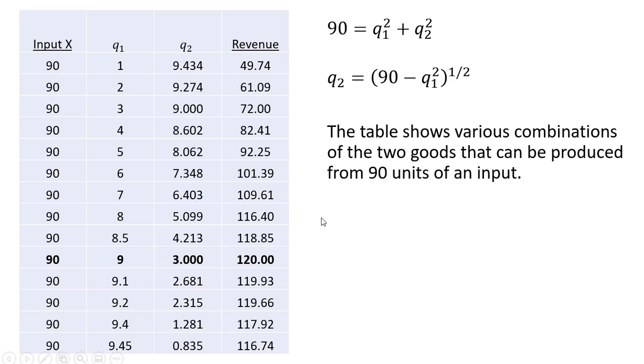Here I made a table that shows various combinations of the two goods that can be produced from 90 units of an input. So again, we're constrained to use 90 units of the input. And using our constraint here and solving it like we did earlier for the output of good 2,